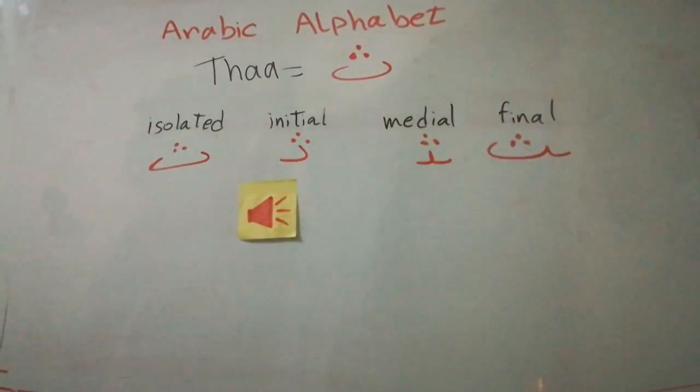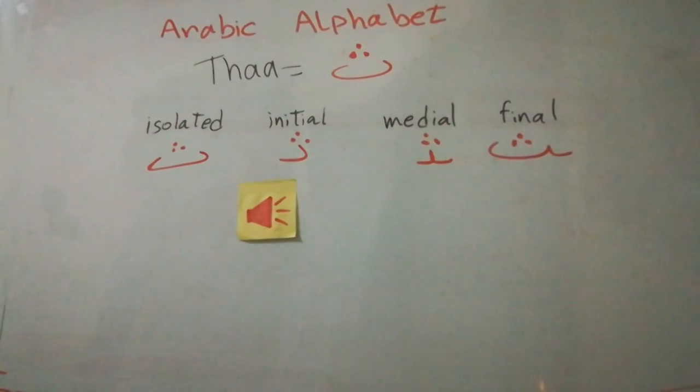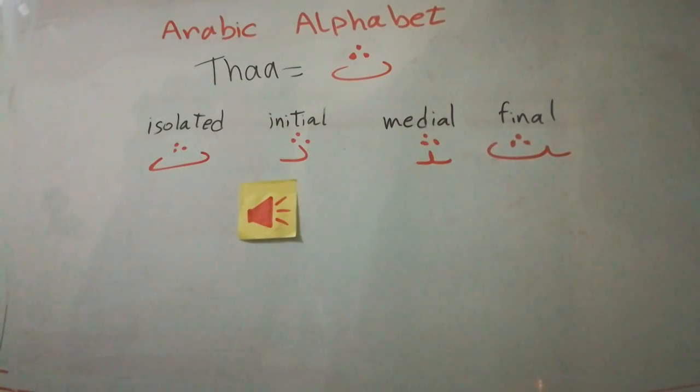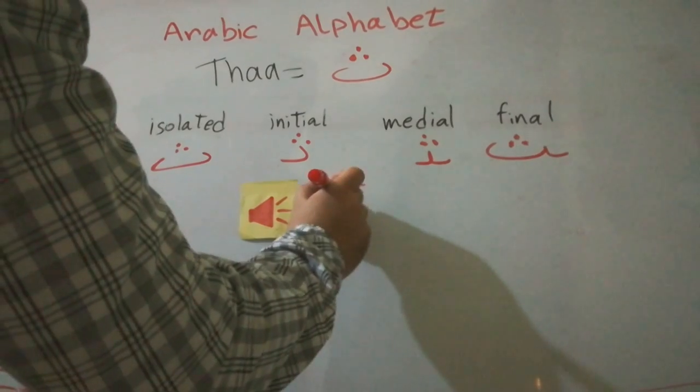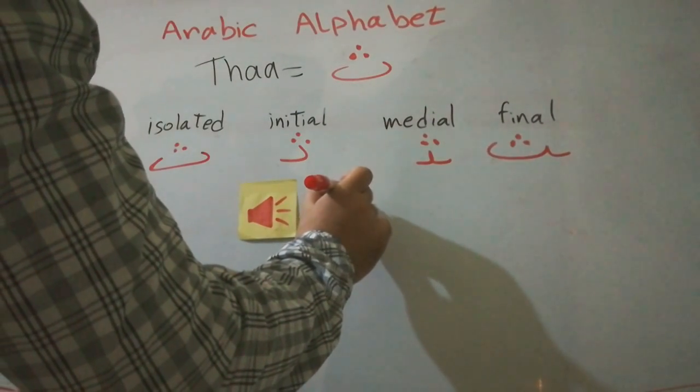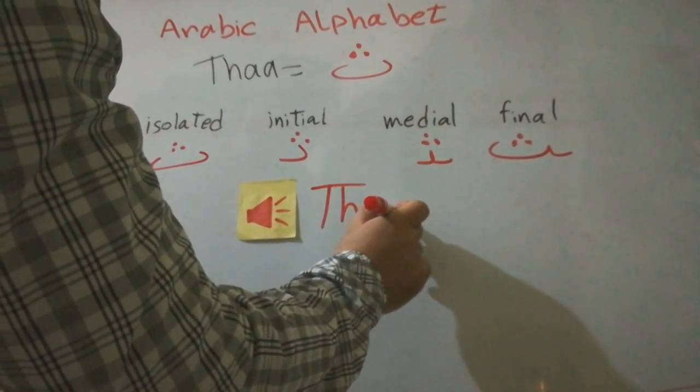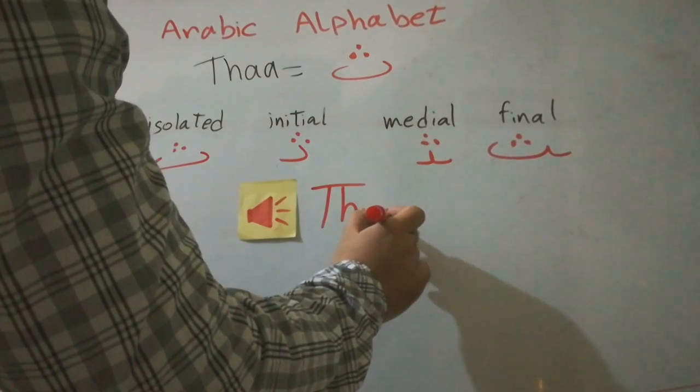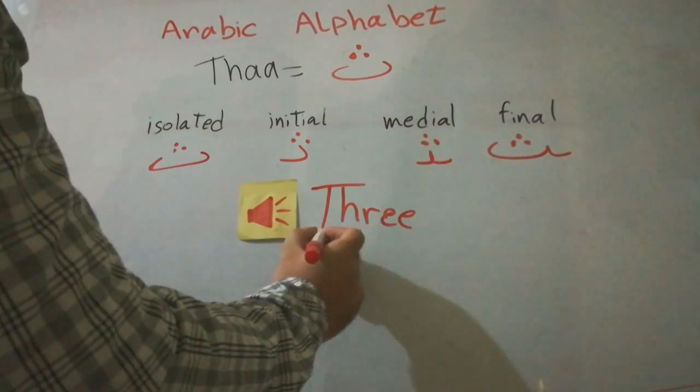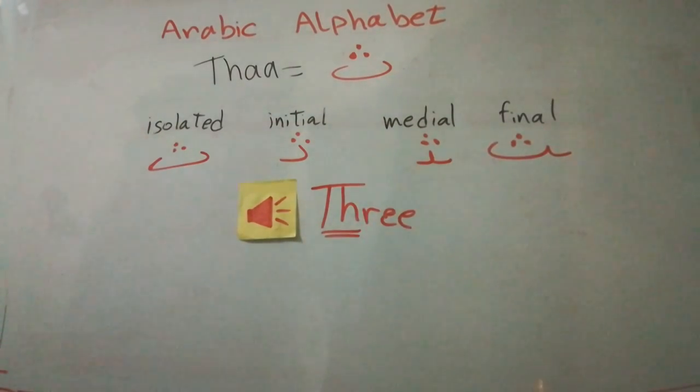Alright, let's take how it sounds. It sounds like that in the word three. TH together in English. In the word three, this is exactly how it sounds. The THA letter in Arabic.